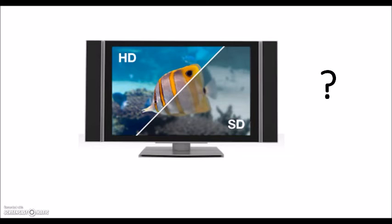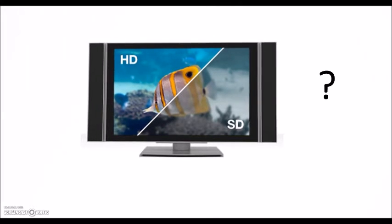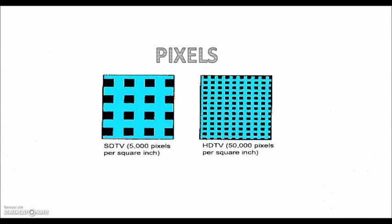Here is an example showing the difference between pictures of SDTV and HDTV. You can see the HDTV portion is quite clear and beautiful compared to SDTV. The reason behind this is pixels. In SDTV there are 5,000 pixels per square range, whereas in HDTV it is 50,000 pixels, so with HDTV we can get clearer images than SDTV.